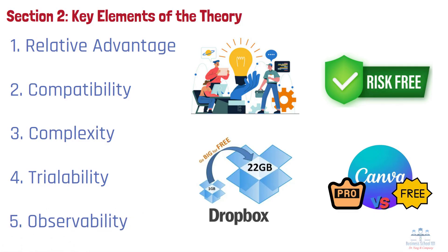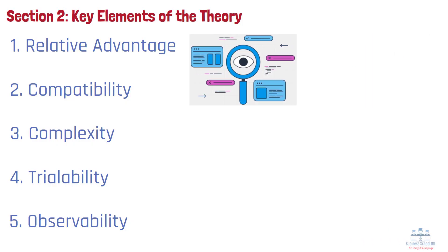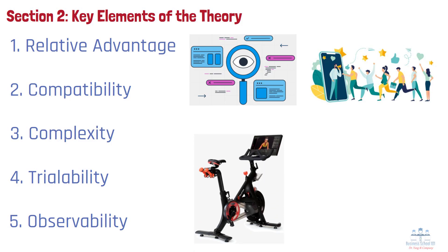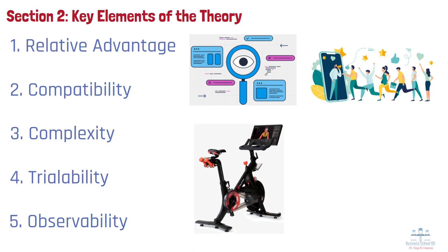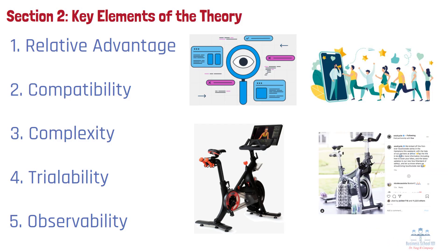Number 5: Observability. Observability is how visible the innovation and its benefits are to others. When people can see friends, co-workers, or influencers using a product successfully, they're more likely to follow. For example, Peloton's rise was fueled not just by fitness quality, but by its social visibility — people shared their workouts, rankings, and bike setups on social media, creating a powerful ripple effect.